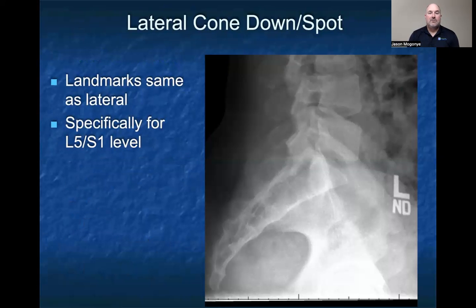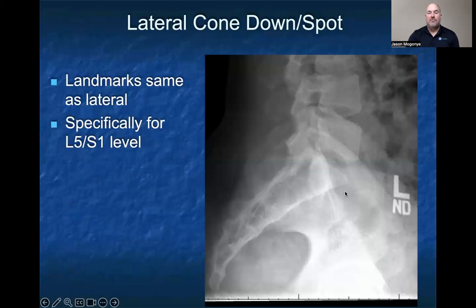In the lateral or cone down spot view, this is really just a close-up view of the L5-S1 level. It's used as a different technique because other anatomical features of the pelvis get in the way. It allows you to see the disc space and the alignment at that level.